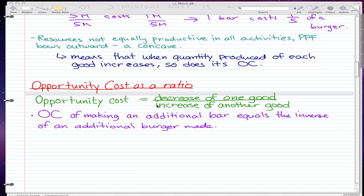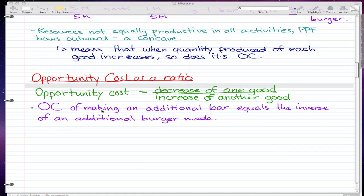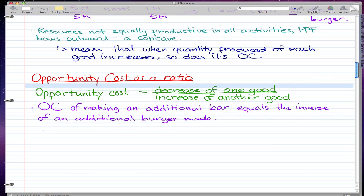But here I introduce you this ratio again, which is opportunity cost equals the decrease of one good over the increase of another good. And the opportunity cost of making an additional bar equals the inverse of an additional burger made. So let's just do this example.